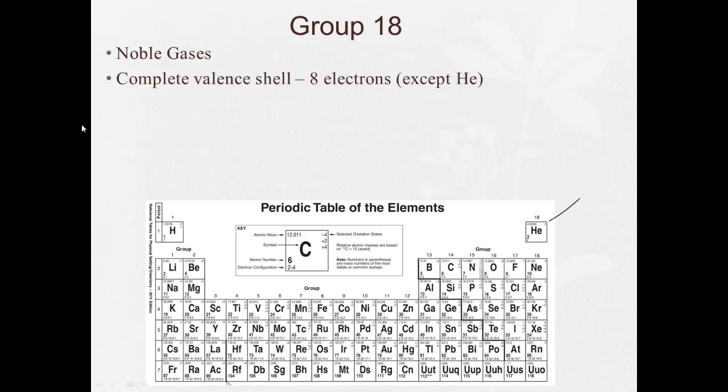They all have a complete valence shell, also called a stable electron configuration. They all have 8 in the outer shell, except for helium, which is part of the reason why there's this space here. It only has 2 because there's only room in that first shell for 2 electrons.